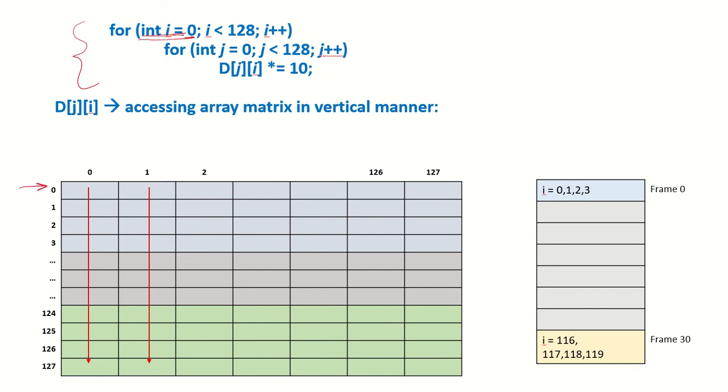For int j equals 0 to 128 we have to go, but the manner in which it is being accessed is D[j][i] not D[i][j], but D[j][i]. That means it is being accessed in this vertical manner.